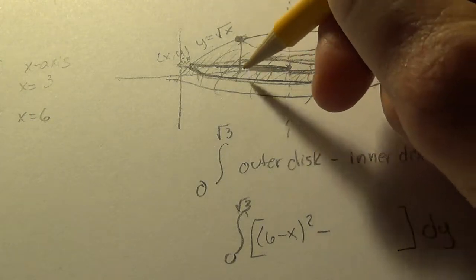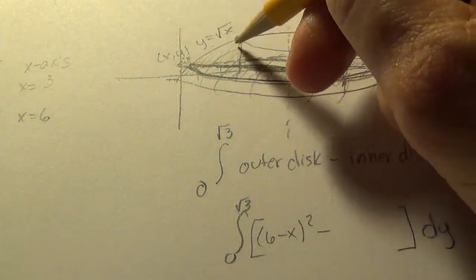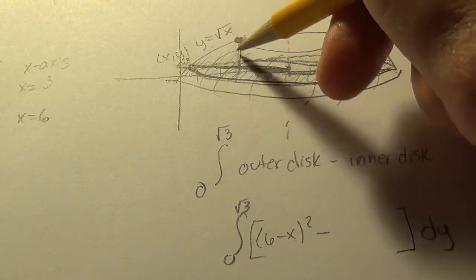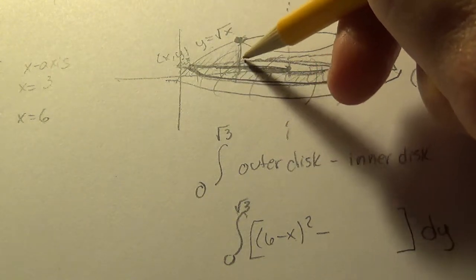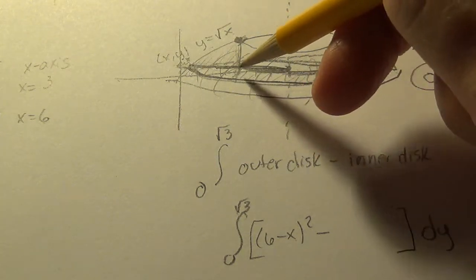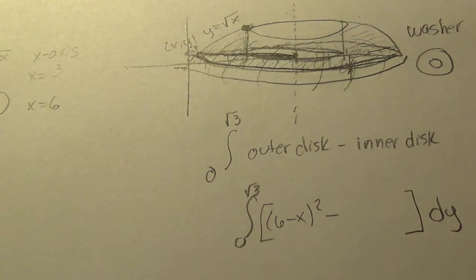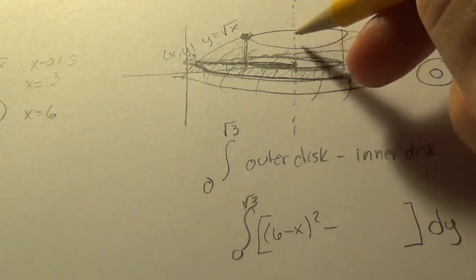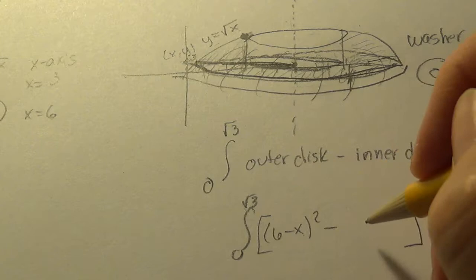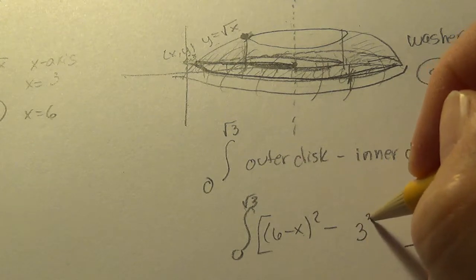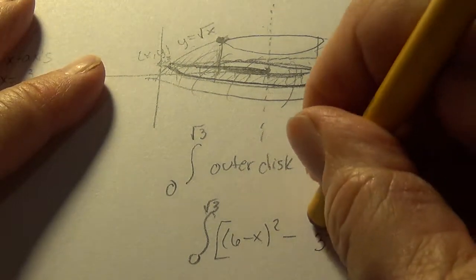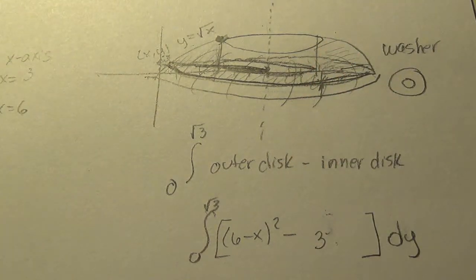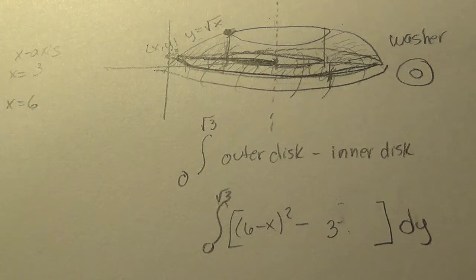The inner disc, because this area, this part of my area, the part of the shape that I revolved is straight, the inner disc has the same radius everywhere. And it happens to be from here to here. This line is 3. This line is 6. So the radius is always 3. So the radius is squared. And we need a pi somewhere.